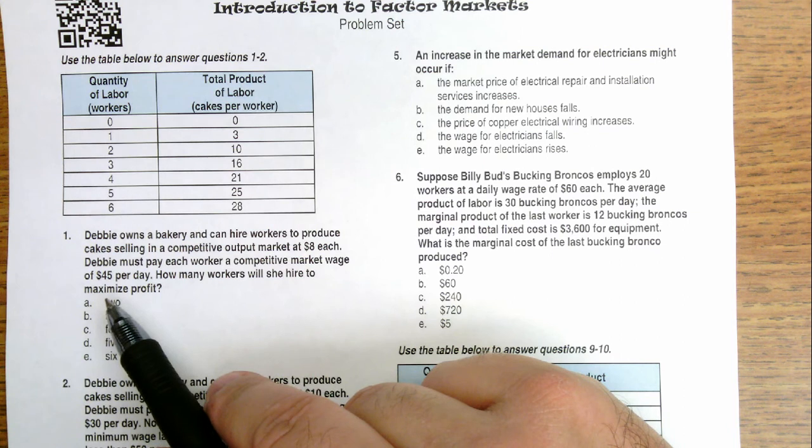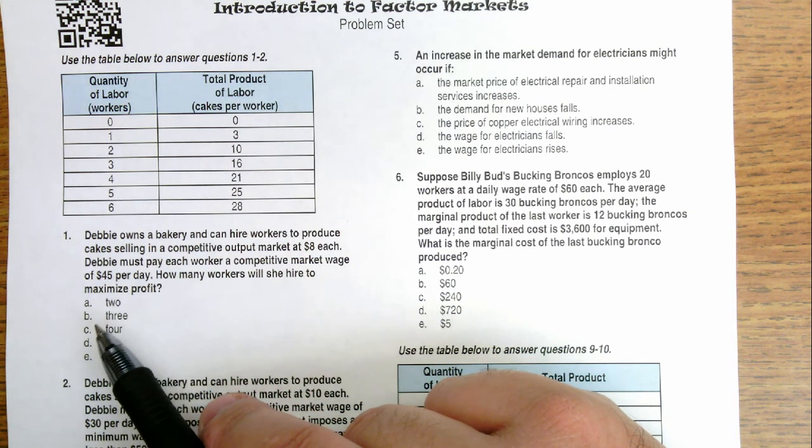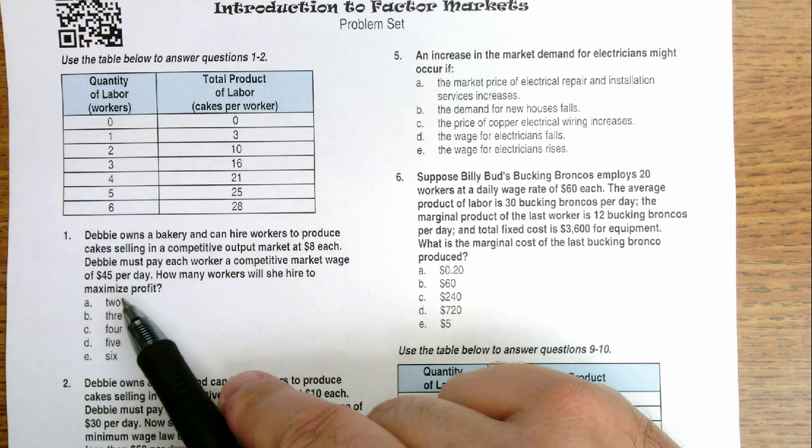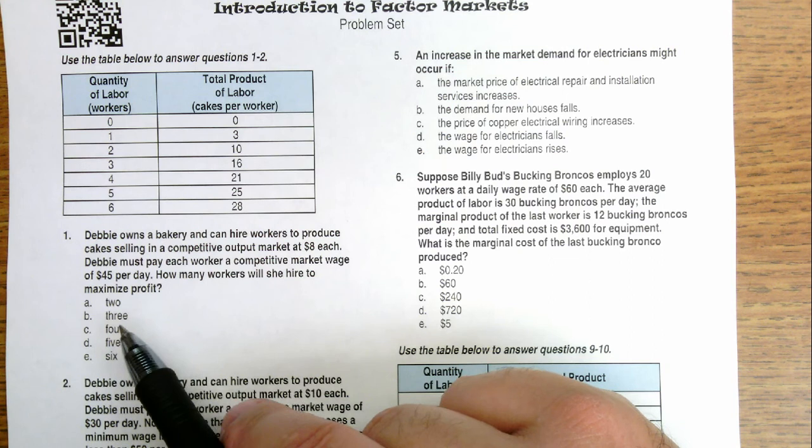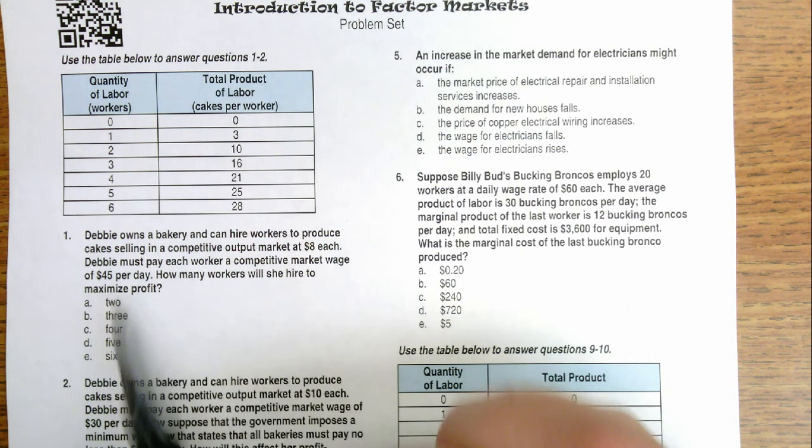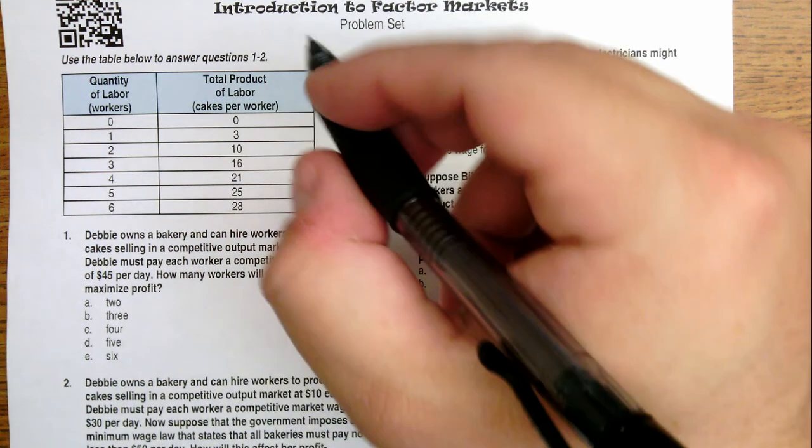So to find that answer, we need to look at the marginal revenue product or the value of the marginal product of labor, depending on how it's been presented to you, and compare that to the wage. We're looking for where the last point where the marginal revenue product is greater than or equal to the marginal cost, which is the wage, so we're still using the optimal output rule of marginal benefit equals marginal cost.